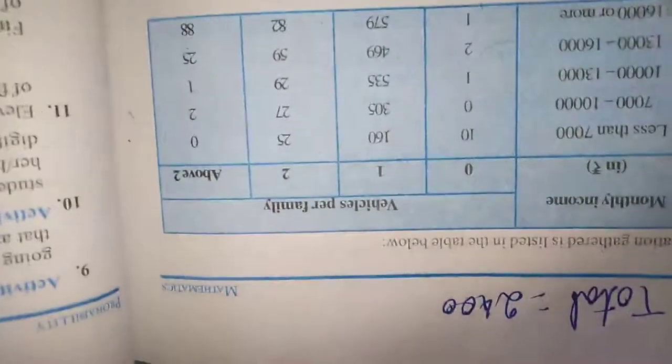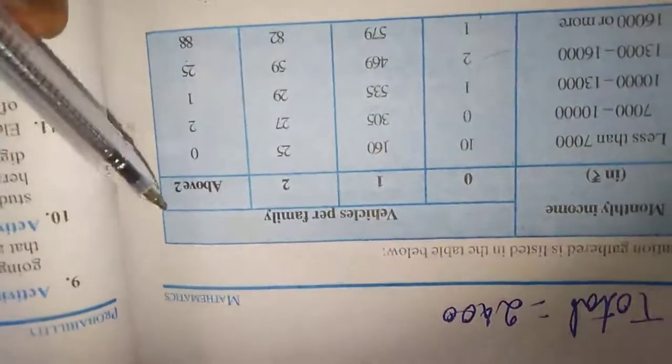This is the income. This is zero vehicle, one vehicle, two vehicle, above two. Now we are going to write the probability of this.